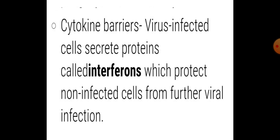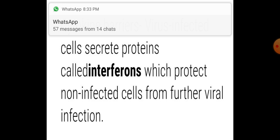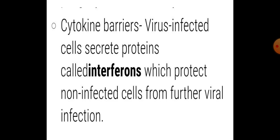Now last is your cytokine barrier. Virus ki agar hum baat karein — suppose virus aapki body mein enter kar gaya hai. Toh virus-infected cells, jo cells honge jo ki virus se already infected ho chuki hain, woh ek tarah ka protein produce karte hain, jisko hum kehte hain interferons. Aur yeh jo interferons hote hain, yeh protect karte hain — ek baar viral infection agar ho gaya, toh virus aur bhi jo cells hote hain aas paas ki, dhire dhire unko attack karta rehta hai, aur is tarah jo hai woh infection failta rehta hai. Lekin yeh jo interferons hote hain, yeh protect karte hain humare non-infected cells ko from further viral infection, taaki aage viral infection proceed na ho, aage extend na ho, wohi pe stop ho jaye. Toh yeh koun karta hai — interferons karta hai.